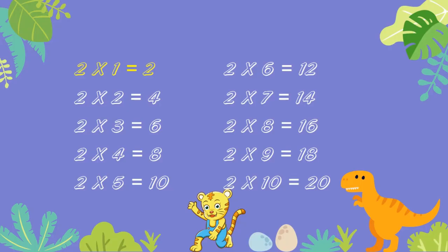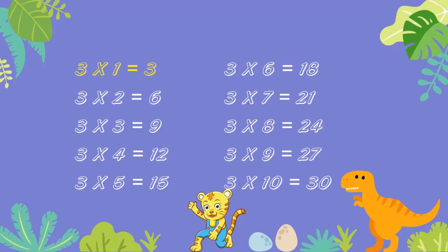2 ones are 2. 2 twos are 4. 2 threes are 6. 2 fours are 8. 2 fives are 10. 2 sixes are 12. 2 sevens are 14. 2 eights are 16. 2 nines are 18. 2 tens are 20.